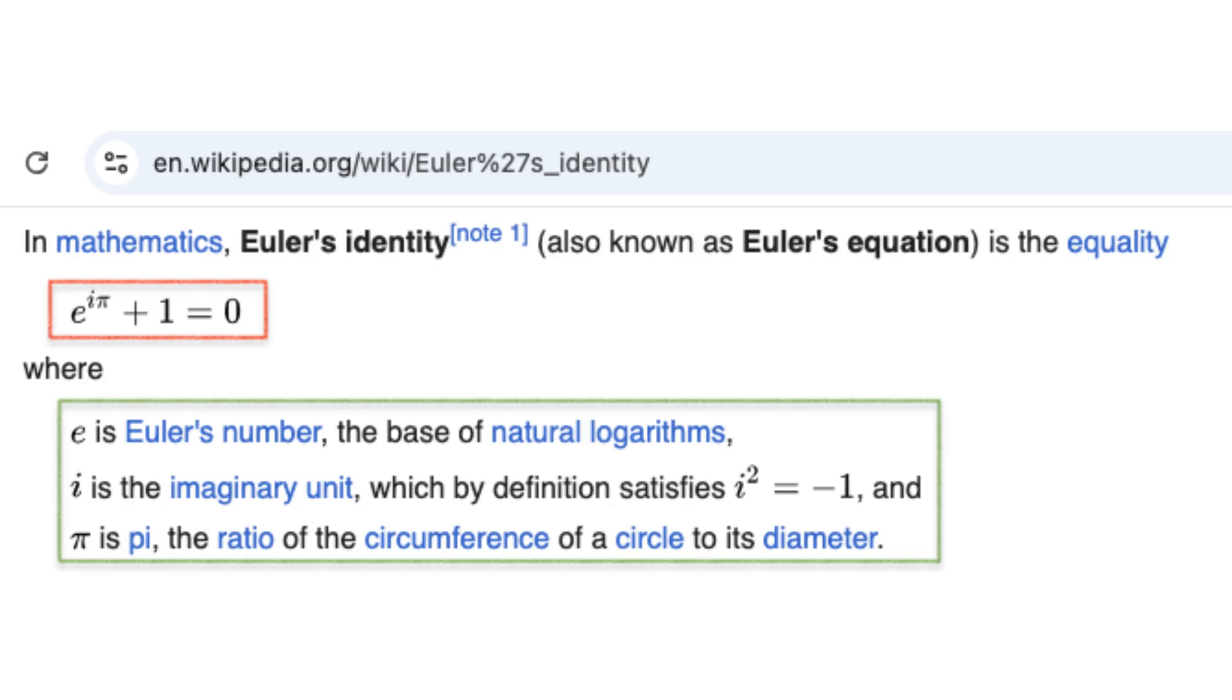This seemingly simple equation combines five of the most important numbers in mathematics: e, i, pi, 1, and 0 in a single breathtaking formula.